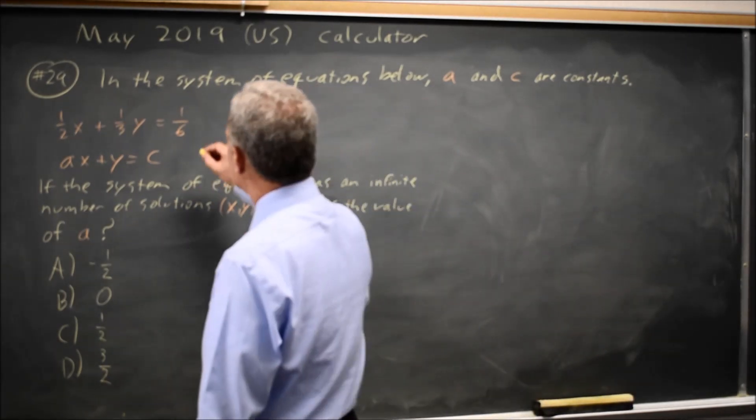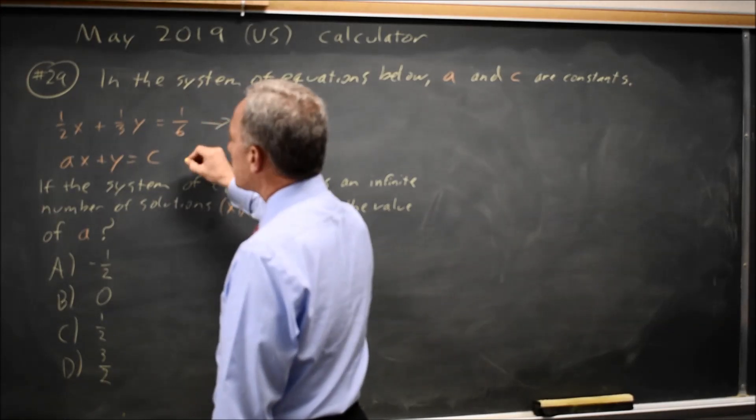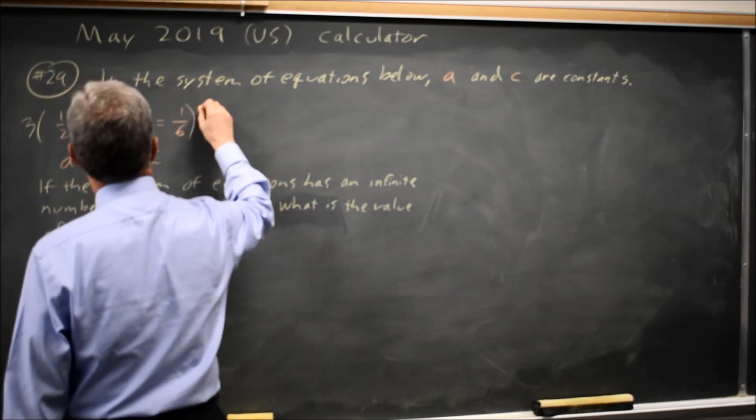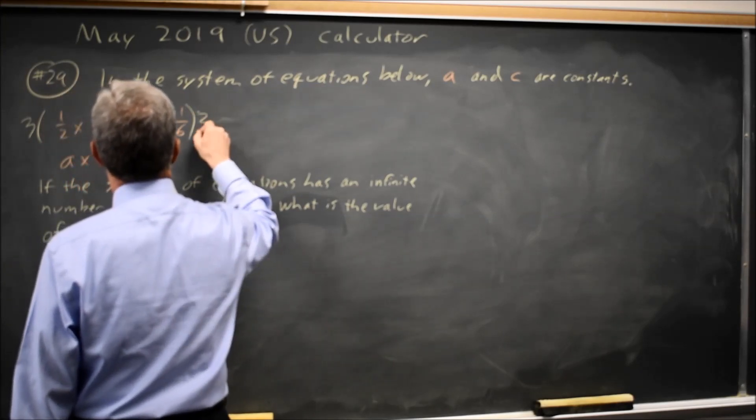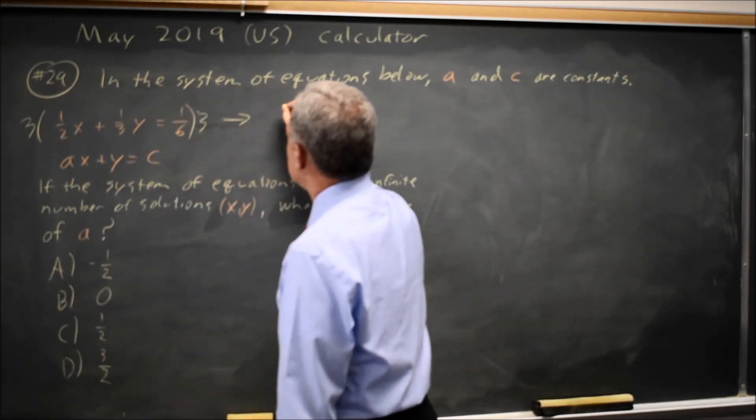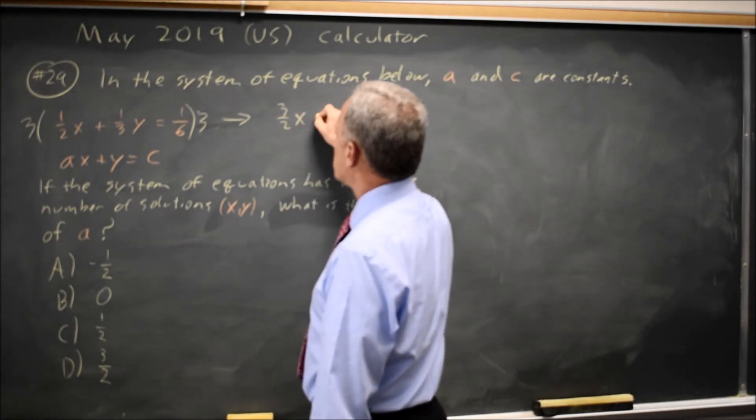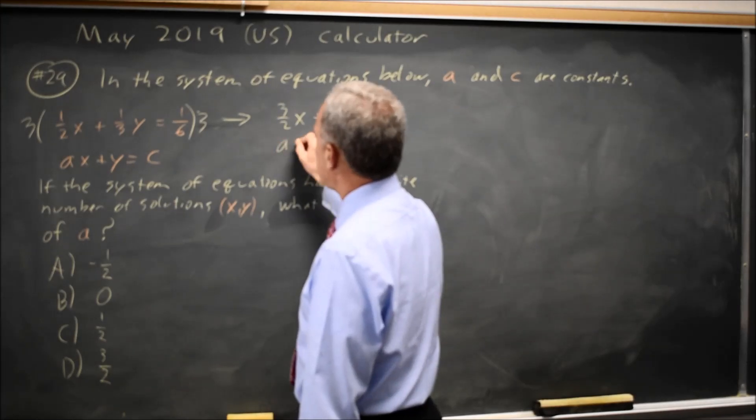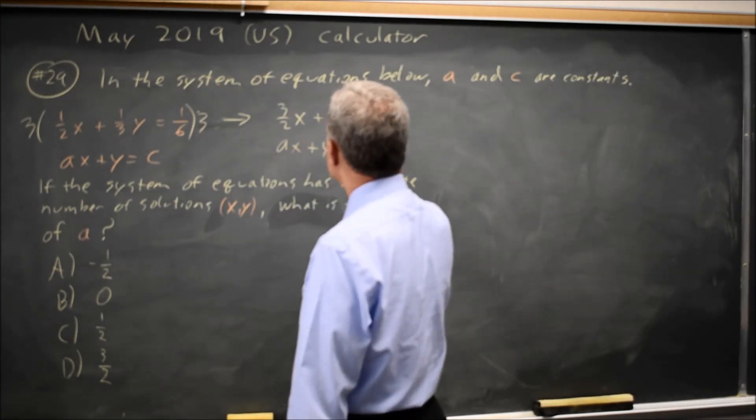So let's write this in a form where we can see the slopes. First, I'm going to multiply this first equation by 3 on both sides to get 3 halves x plus y equals 3 over 6 is 1 half. And ax plus y equals c.